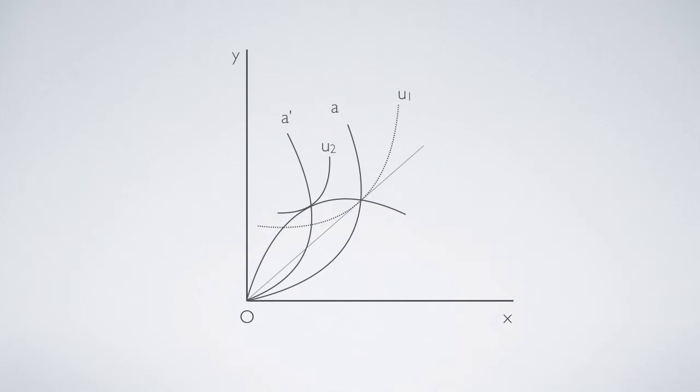The indifference curve U2 is not correctly positioned either. Curve A is the locus of all the tangents between price lines and indifference curves.